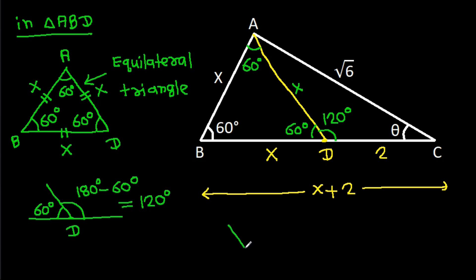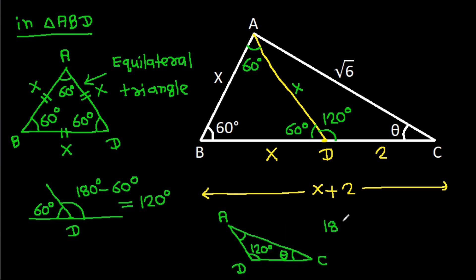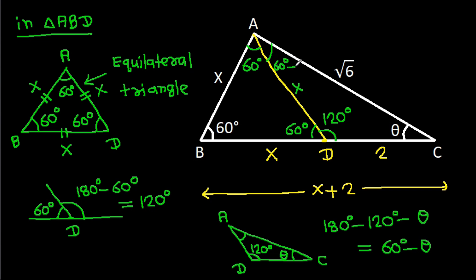Also, in triangle ACD, angle ADC is 120 degrees and angle ACD is theta. So the remaining angle DAC equals 180 degrees minus 120 degrees minus theta, which equals 60 degrees minus theta.